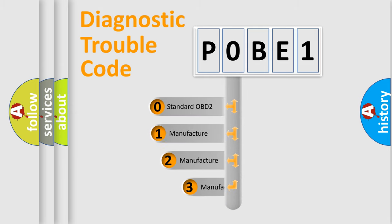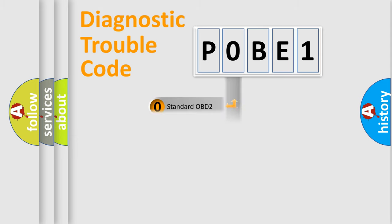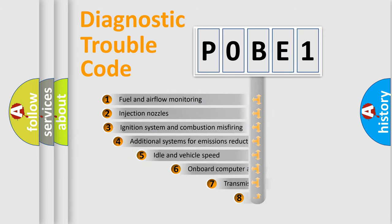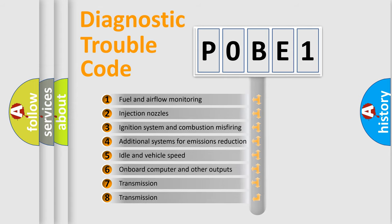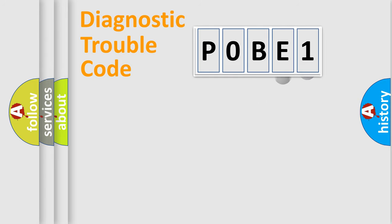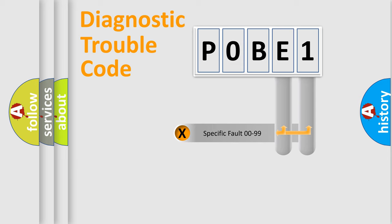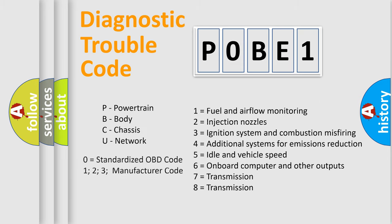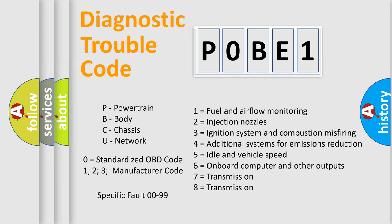If the second character is expressed as zero, it is a standardized error. In the case of numbers 1, 2, or 3, it is a more specific expression of a car-specific error. The third character specifies a subset of errors. This distribution is valid only for the standardized DTC code, and only the last two characters define the specific fault of the group. Such a division is valid only if the second character code is expressed by the number zero.